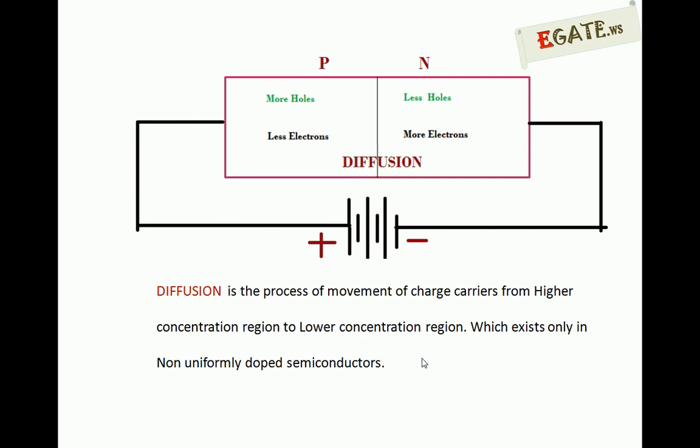On the p-side, holes are majority carriers and electrons are minority carriers, so the p-side has more holes and fewer electrons. On the n-side, holes are minority carriers and electrons are majority carriers, giving more electrons and fewer holes. Diffusion is the movement of charge carriers from higher concentration to lower concentration regions. Diffusion dominates under forward bias, whereas drift dominates under reverse bias — this is a standard statement.